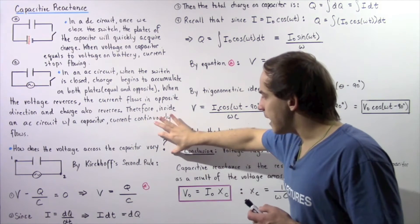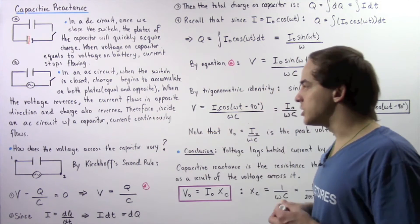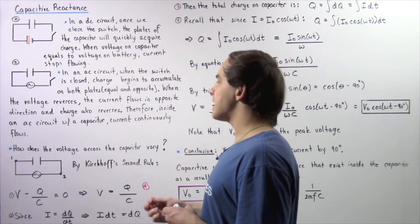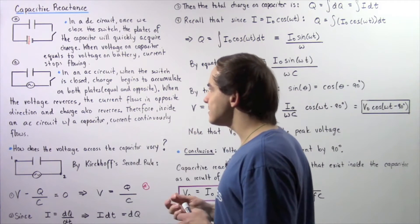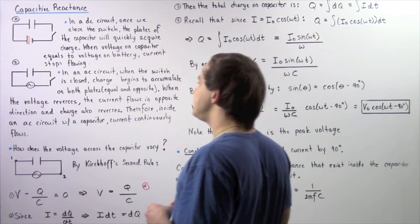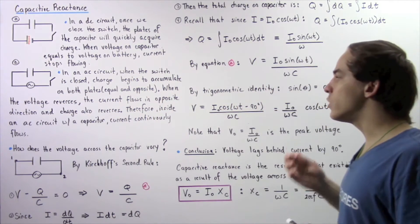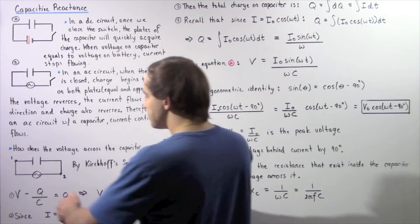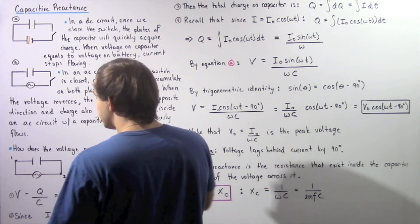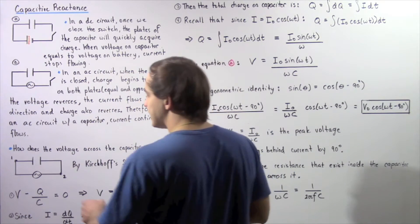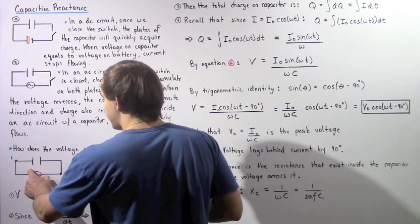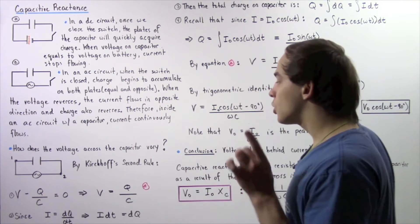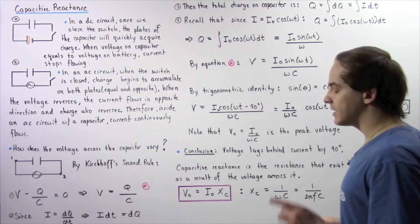So let's answer the following question: how exactly does the voltage across our capacitor inside the AC circuit vary with respect to time? Let's look at the electric circuit that contains an alternating current source and a capacitor, and apply Kirchhoff's second rule.